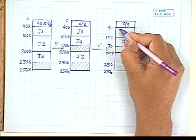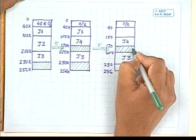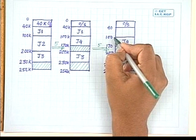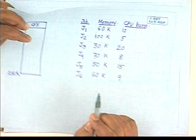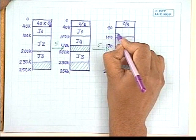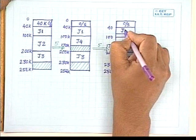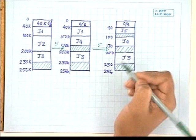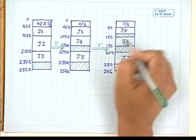After J1 completes, there are now three free partitions: 10 KB, 30 KB, and 60 KB. J5 requires 50 KB, so the 60 KB free partition is split: 50 KB is allocated to J5, and the remaining 10 KB stays as a free partition. J6, which needs 60 KB, still cannot be allocated at this moment because no single free partition of 60 KB is available.